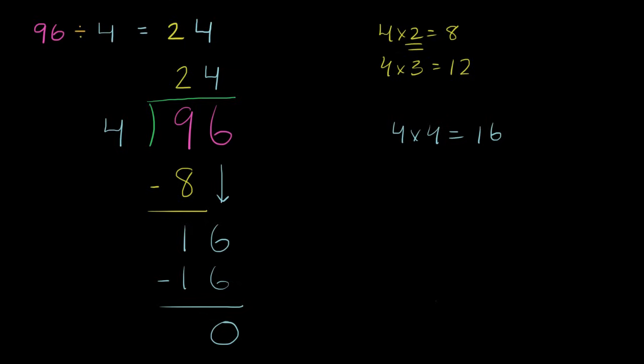So we're saying, how many times does 4 go into 90? How many times does 4 go into 90 if we're thinking about multiples of 10? Well, it goes 20 times. 4 times 20 is 80. And so we said, 4 times 20 is 80, but we still have 16 left over. You do 96 minus 80, you have 16 left over to divide 4 into.